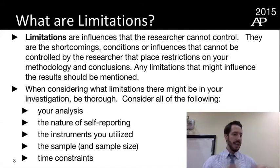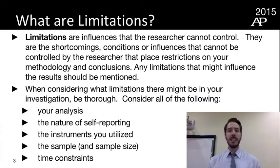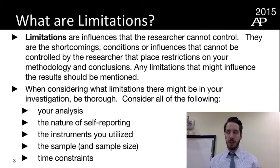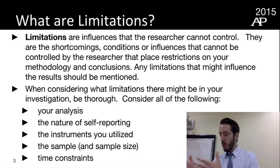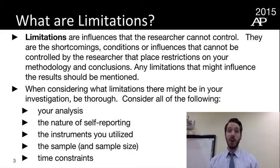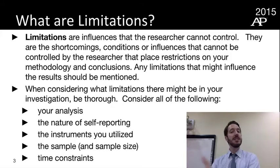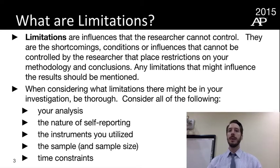Limitations are things in the research and the data you got back that are anomalies — things you can't control. They are shortcomings of your research, but shortcomings because they're just outside of your control: restrictions due to perhaps time, resources, money, environment, or the fact that you're a high school student. Any limitation that might influence your results needs to be mentioned. No research is perfect, and any limitations need to be included to be considered professional.